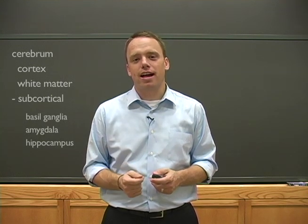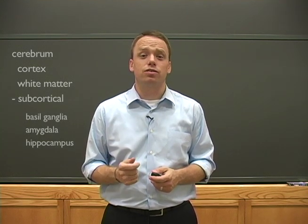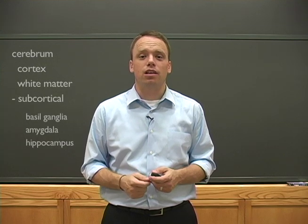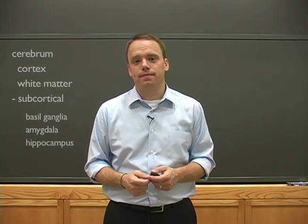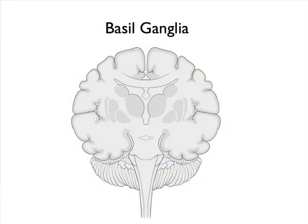Embedded deep in the white matter tracts are several very important subcortical structures, including the basal ganglia, the amygdala, and the hippocampus. Let's start with the basal ganglia, which are paired nuclei at the base of the cerebrum. The basal ganglia are involved in several important functions, including the coordination of voluntary movement and a process called behavioral selection.